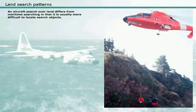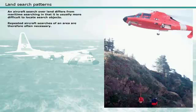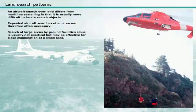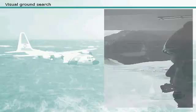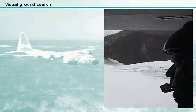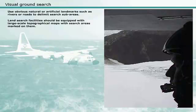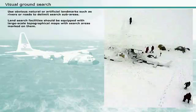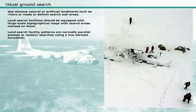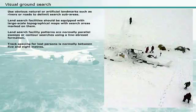An aircraft search over land differs from maritime searching in that it is usually more difficult to locate search objects, so repeated aircraft searches of an area are often necessary. Search of large areas by ground facilities alone is usually not practical, but may be effective for close examination of a small area. When performing a visual ground search, use obvious natural or artificial landmarks such as rivers or roads to delimit search sub-areas. Land search facilities should be equipped with large-scale topographical maps with search areas marked on them. Land search facility patterns are normally parallel sweeps or contour searches using a line abreast formation, with track spacing for lost persons normally between 5 and 8 metres.